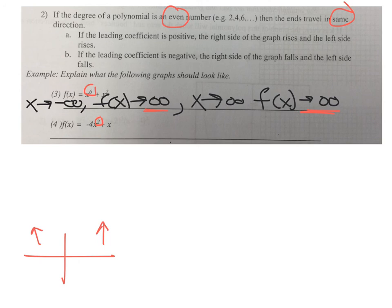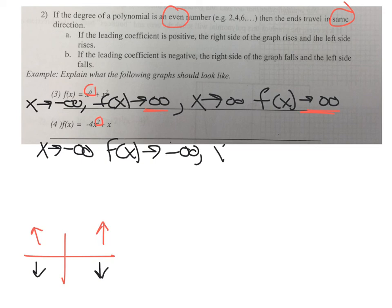For the next one, it's even so the ends go in the same direction, but since the leading coefficient is negative, both ends go down. As x approaches negative infinity, f of x goes to negative infinity. And as x approaches positive infinity, f of x goes to negative infinity as well — same direction.